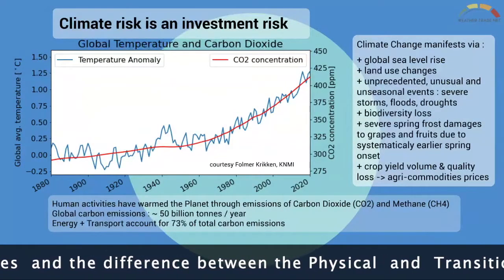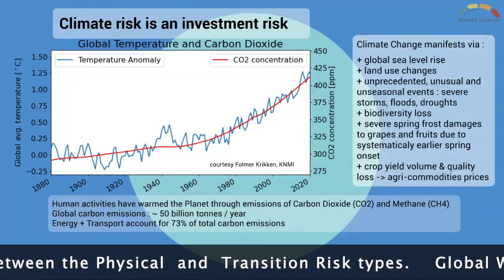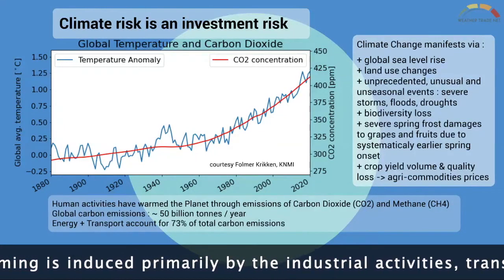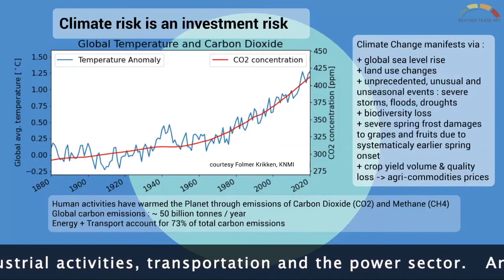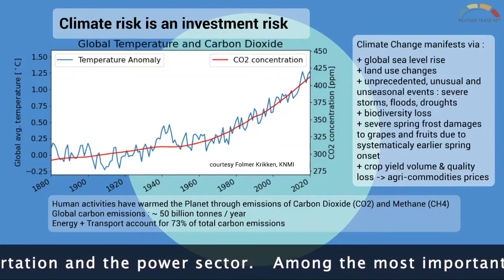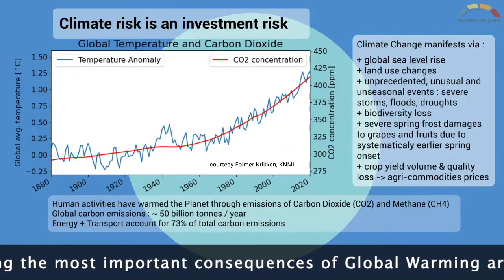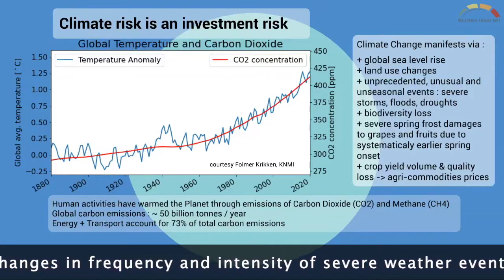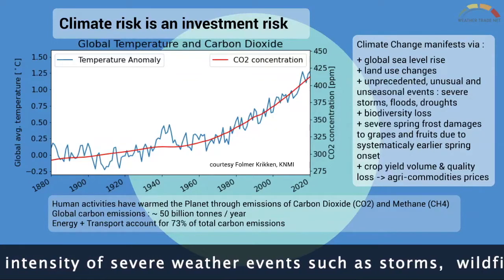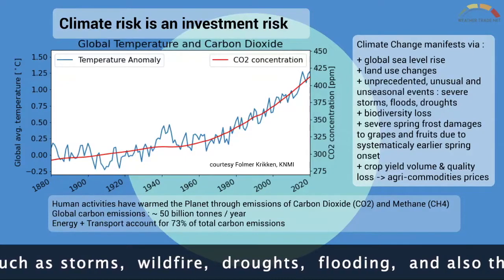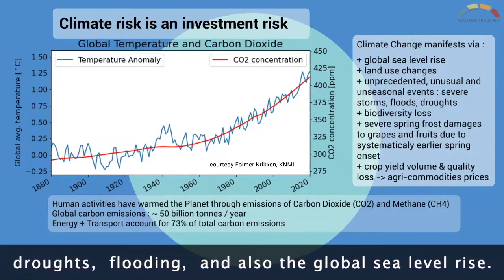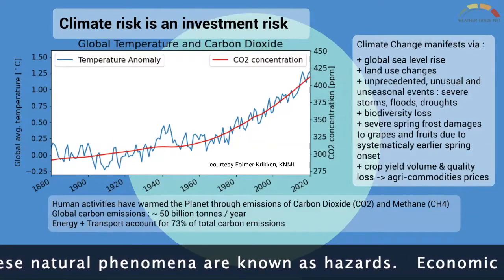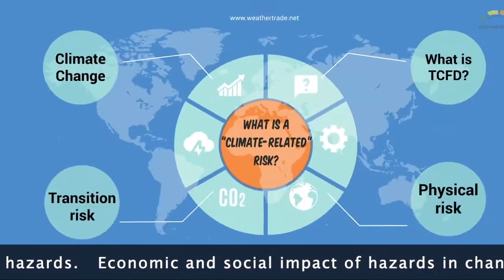Global warming is induced primarily by industrial activities, transportation, and the power sector. Among the most important consequences of global warming are changes in frequency and intensity of severe weather events, such as storms, wildfire, droughts, flooding, and also the global sea level rise. These natural phenomena are known as hazards.